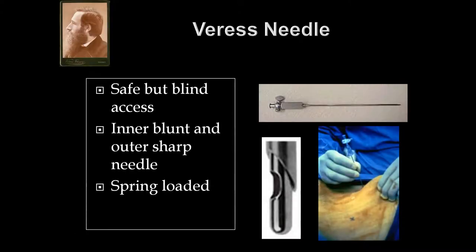Jonas Veress designed the Veress needle for safe peritoneal access. It has an inner blunt and an outer sharp needle, and it is spring-loaded. When the Veress needle enters the peritoneal cavity, the inner blunt needle springs back and comes out, preventing injury to the viscera by the sharp end. We should check that the spring is working well and that the lumen is patent before each and every laparoscopy case.